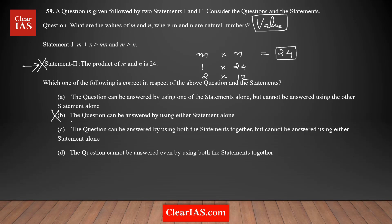At this stage, option B is eliminated. Option B says the question can be answered using either statement alone. Since Statement 2 alone is not sufficient, option B is eliminated. With just two examples showing multiple values are possible, you don't need to check all other combinations — that's not necessary.